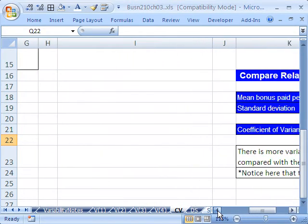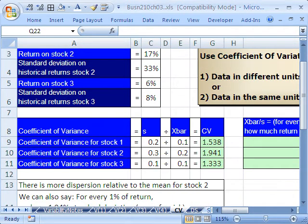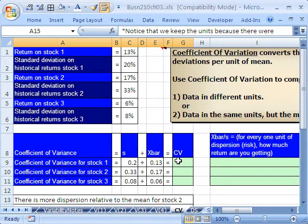So more variability than this one, even though everything was different. Now, let's look at a stock example. If I can scroll over here, it's up to near the top of the sheet. Coefficient of variance for our stock values. We have stock one return and then standard deviation on historical returns here. Stock two, standard deviation. The return, stock three, standard deviation three. And we just want to calculate coefficient of variance.